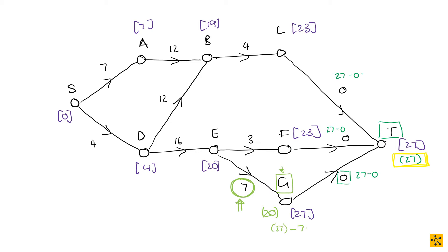Then you're going to look at F. So you're going to have 27 minus 3. 27 minus 3 is going to give you 24. So the latest start time for F is at time unit 24. And then you're going to do the same for L. L is going to be 27 minus 4. So 27 minus 4 gives you 23. The latest start time for L is at time unit 23.